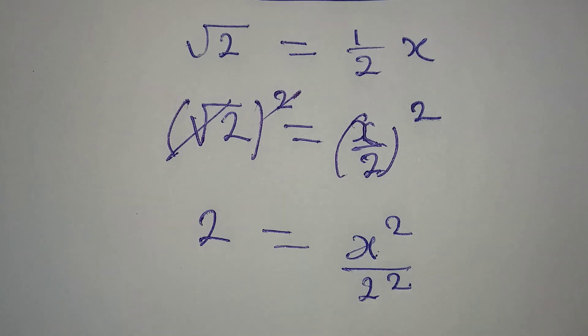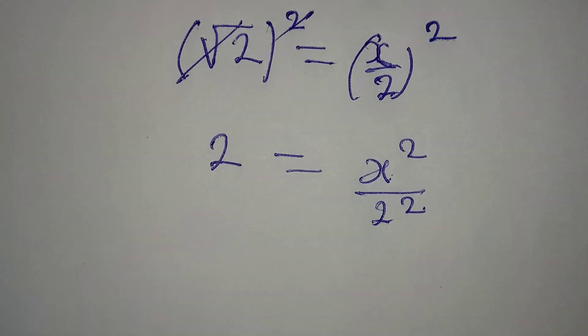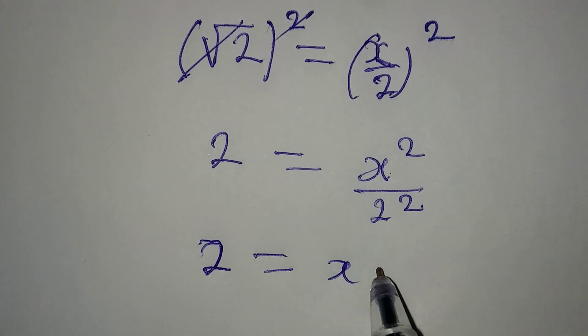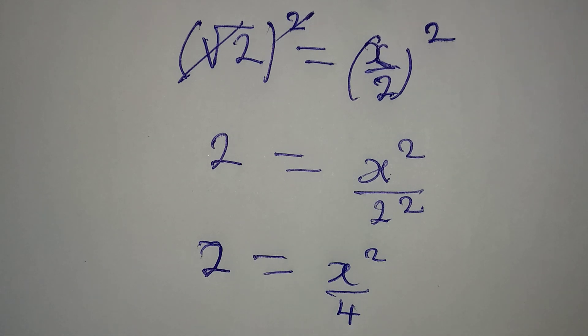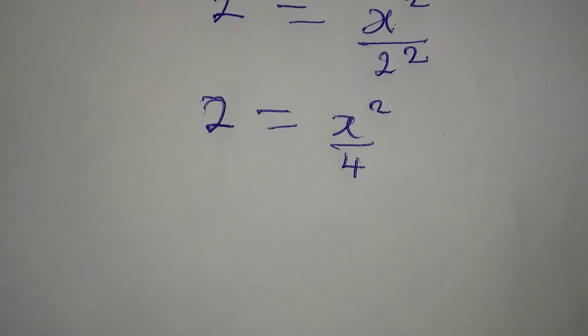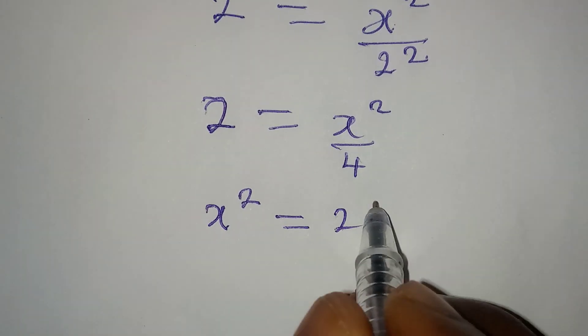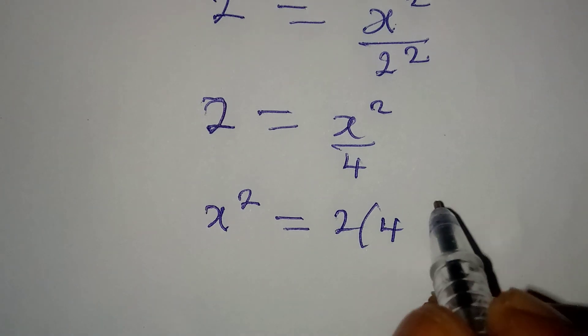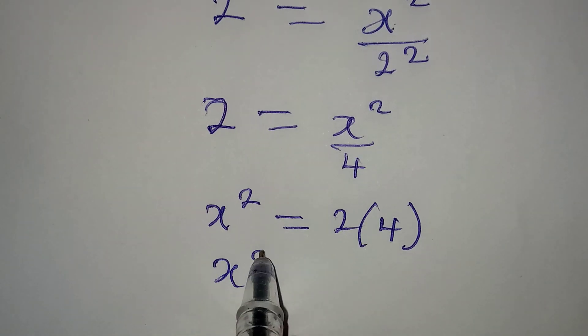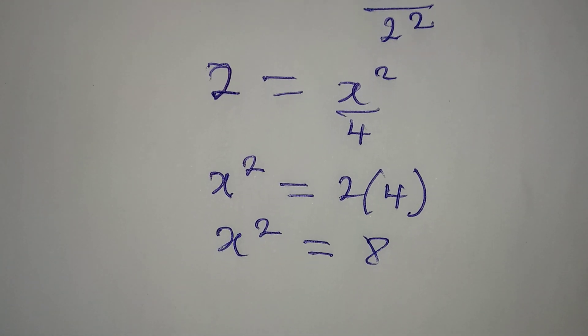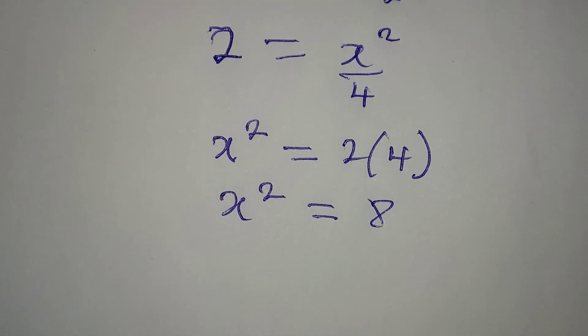Our 2 will be equal to X squared over 4. Then the next thing to do is to cross multiply so that X squared will be equal to 2 times 4. We have our X squared to be equal to 8. From here this is quadratic.